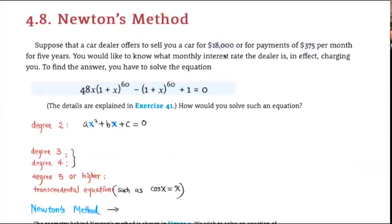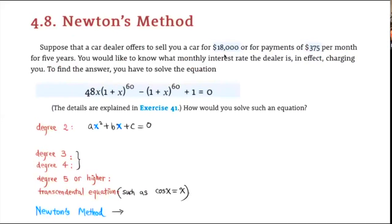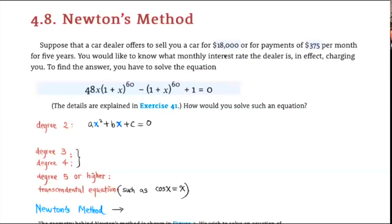Section 4.8: Newton's Method. Suppose that a car dealer offers to sell you a car for $18,000 or for payments of $375 per month for 5 years. The monthly interest rate that the dealer charges is a solution for this equation.